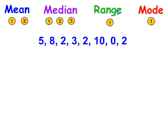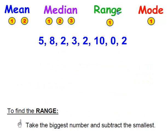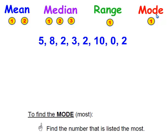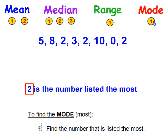To find the range in this set of numbers, I'm going to take the biggest number, which is 10, and subtract the smallest number, which is 0. So the range in this set of numbers is 10. And to find the mode, it's the number that's listed the most — in this data, 2 is listed the most, three times, whereas the other numbers are listed fewer than that.